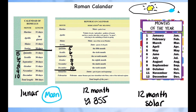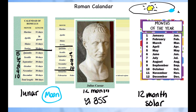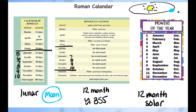You may have heard of a guy called Julius Caesar — pretty famous person. They named two of the months after Julius Augustus Caesar. So we have Julius for the month we now call July, and Augustus, which is of course August.